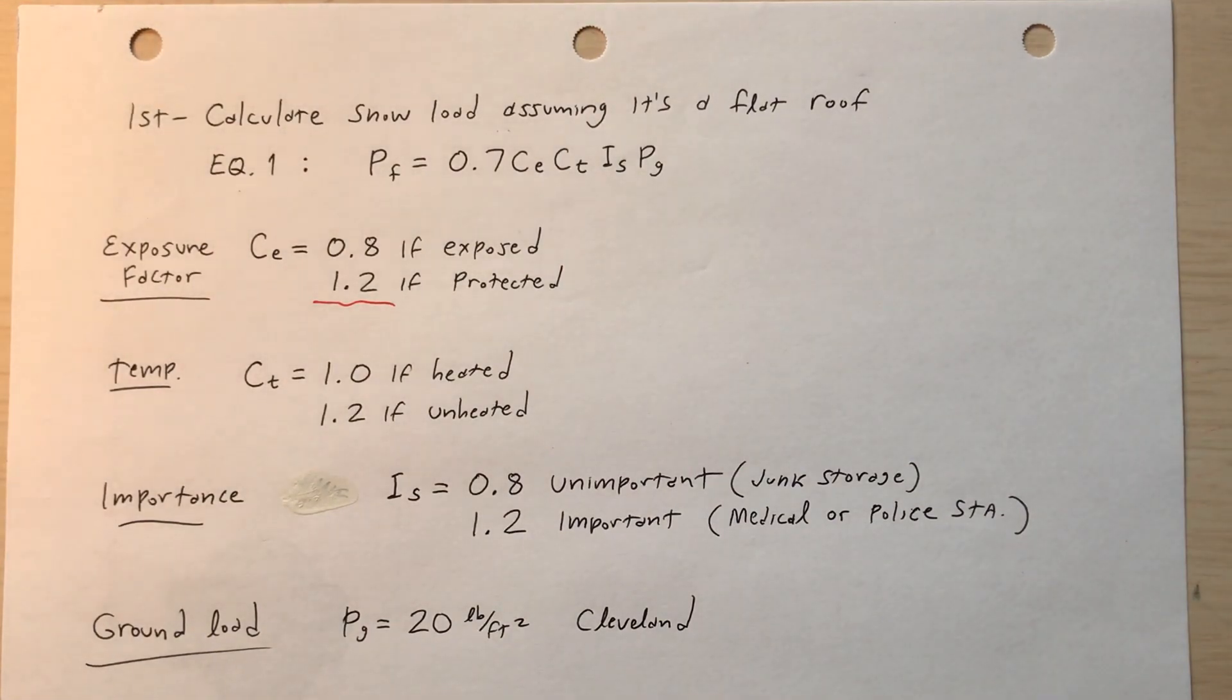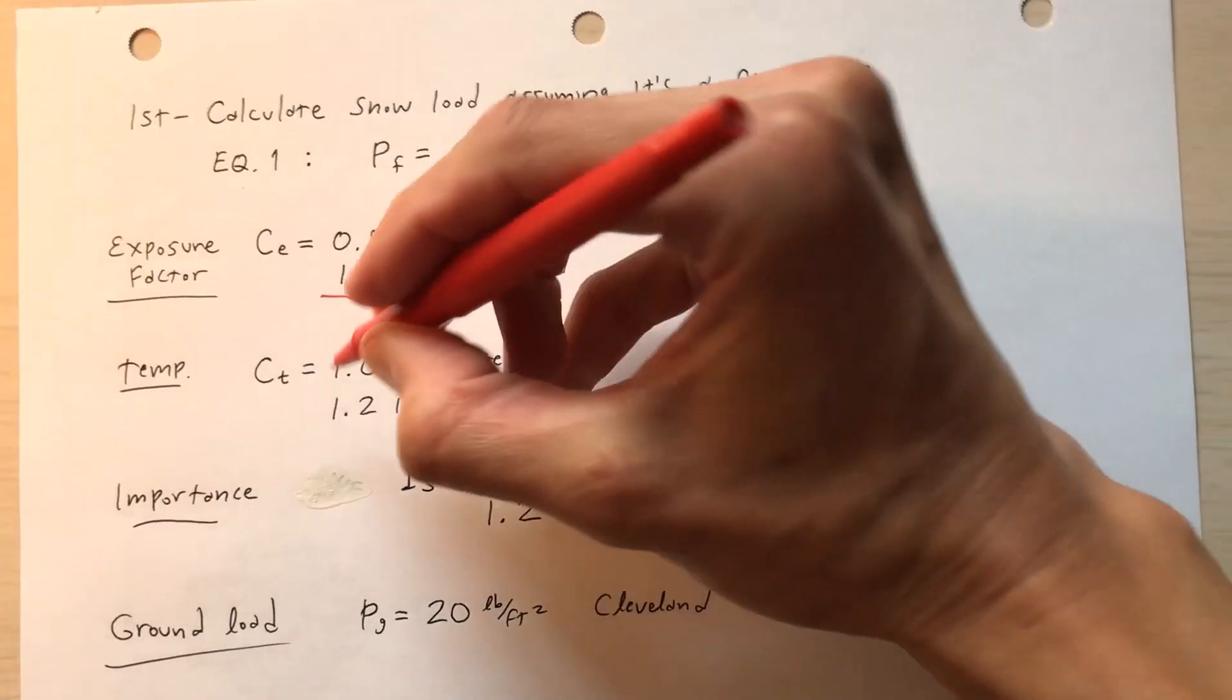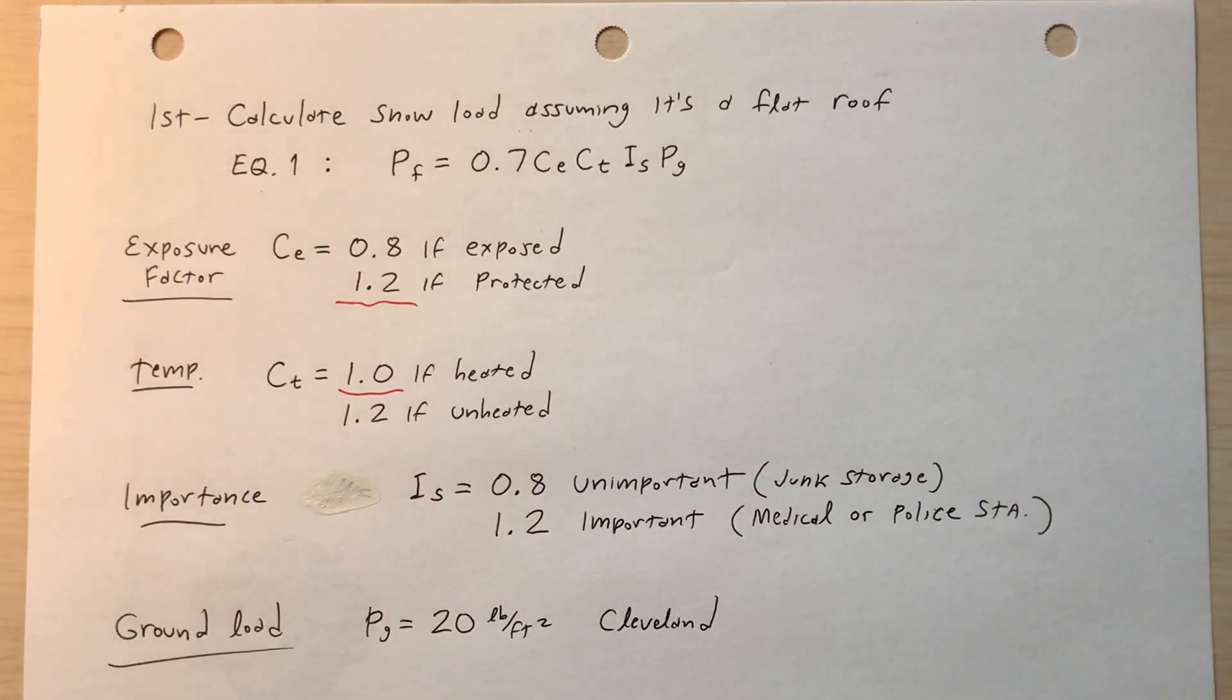For temperature, c_t, one if it's heated, 1.2 if it's unheated. In this case, I'll assume it's heated. I'll assume that it's the heated structure, meaning that the snow on the roof is more likely to melt.